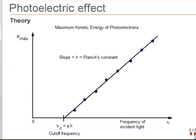This plot summarizes the experimental results. Below a certain frequency, no photoelectrons are produced. As the frequency of the light increases, the binding energy is first overcome, and the excess energy goes into the kinetic energy of the emitted photoelectron.